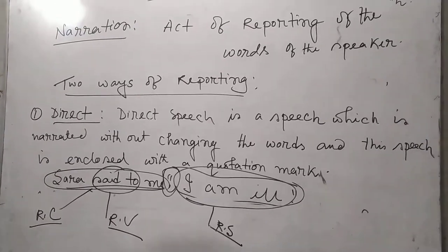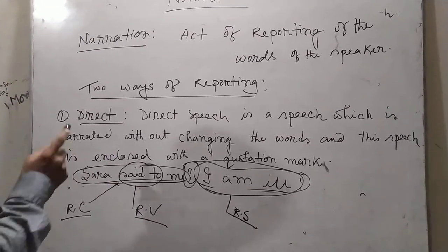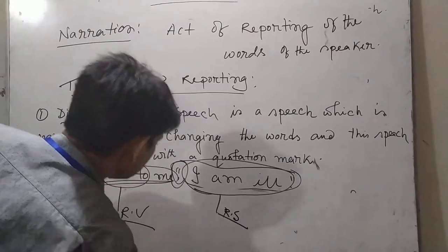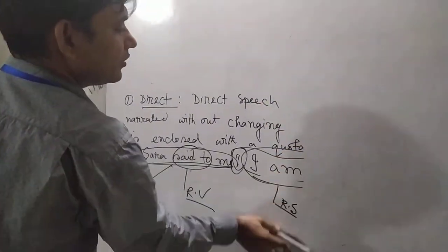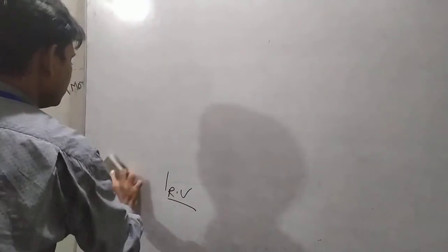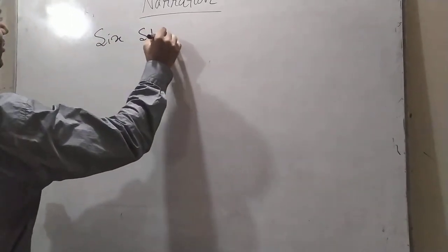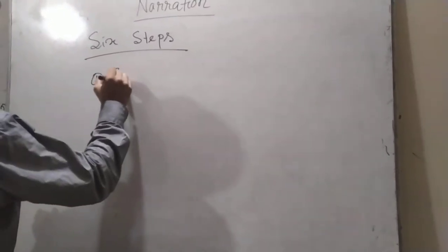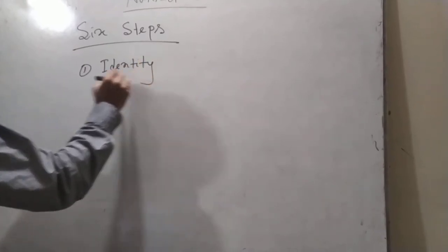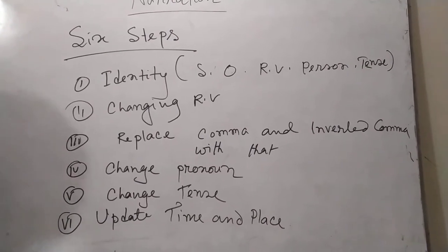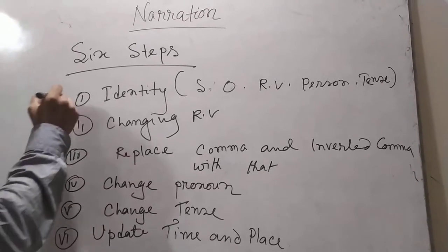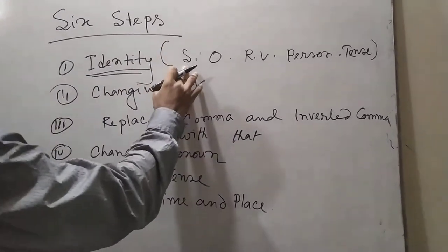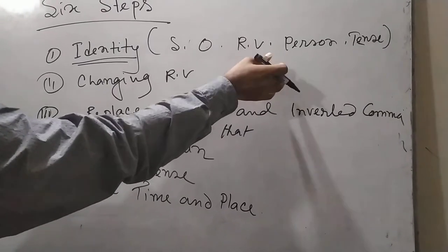Now I will discuss how direct speech can be changed into indirect speech. Before going to change direct speech to indirect speech, you all have to be conscious of six steps. To change direct speech of an assertive sentence into indirect speech, you must be conscious about the following six steps: identify subject, object, reporting verb, person — first person, second person, third person — and tense also.